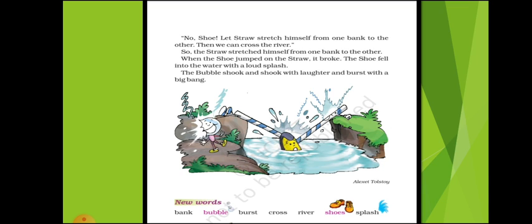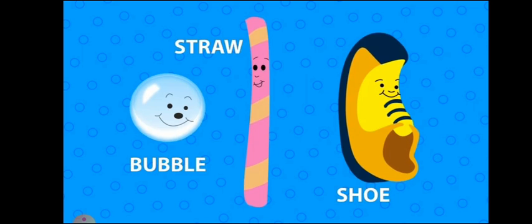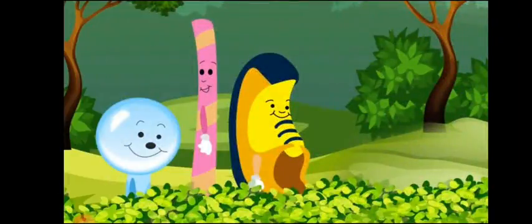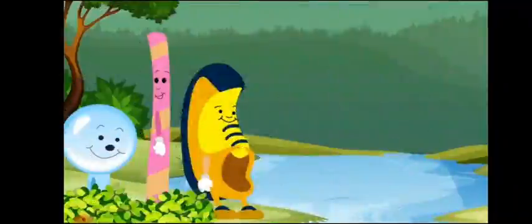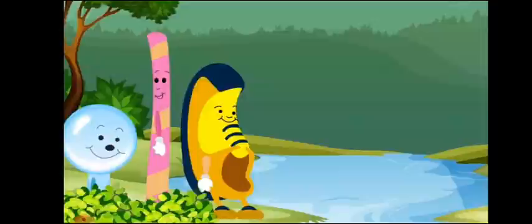So children, let's understand this story with the help of a picture. This story is about three friends — the bubble, the straw, and the shoe. One day they were passing through a forest. They came near to a river and they did not know how to cross it. Finally, they decided to cross the river with the help of the straw.